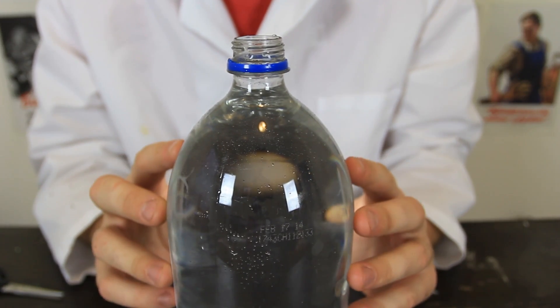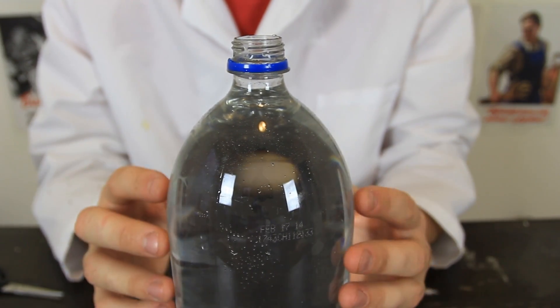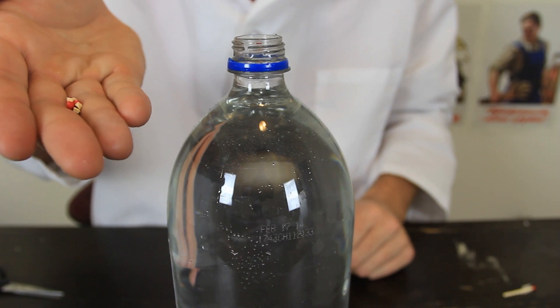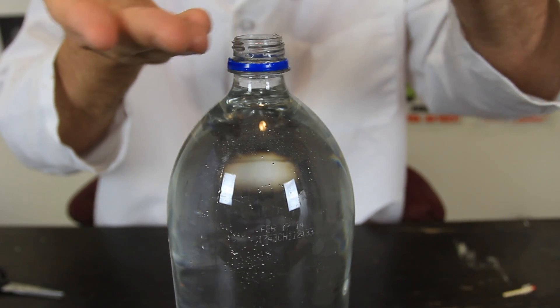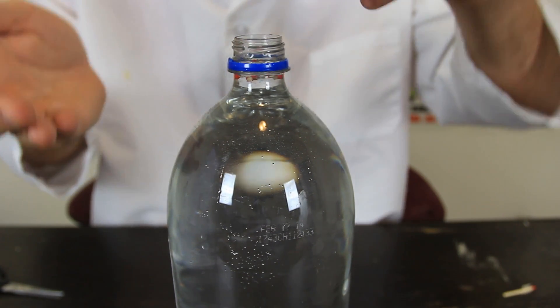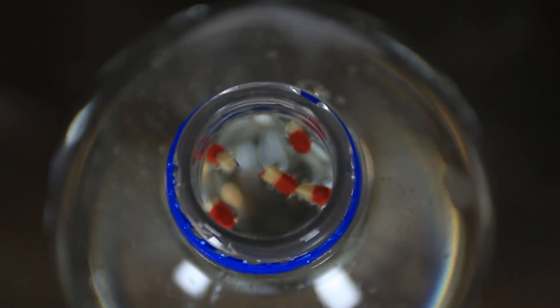Next we're going to grab an empty plastic bottle and fill it up with water. Then we're going to put the match heads inside the bottle with water. Just like that. You see they're just floating there.